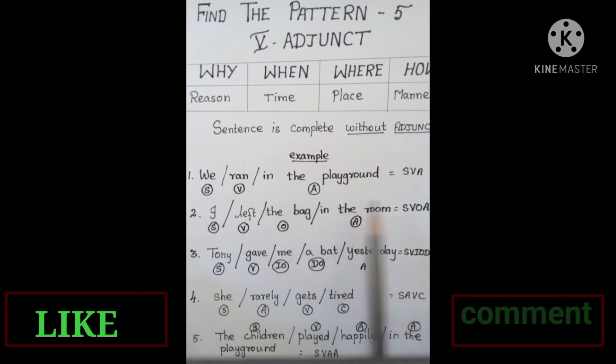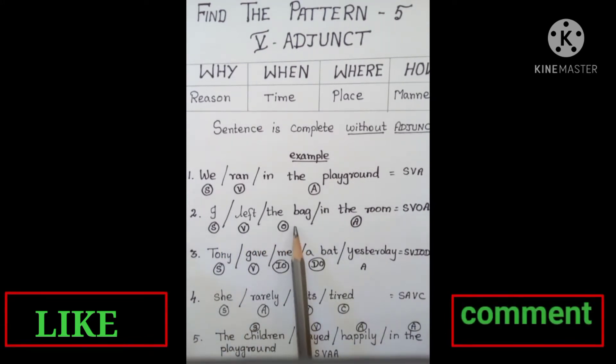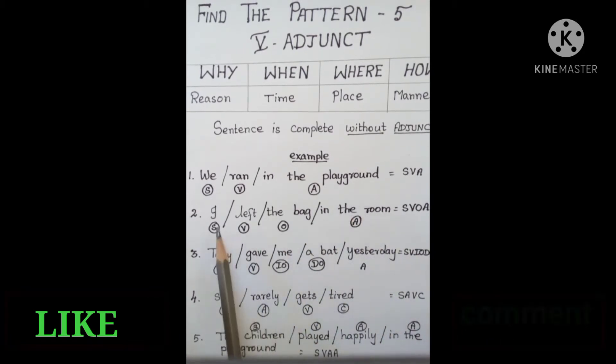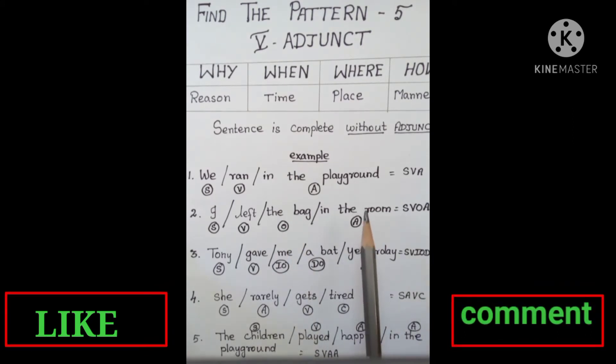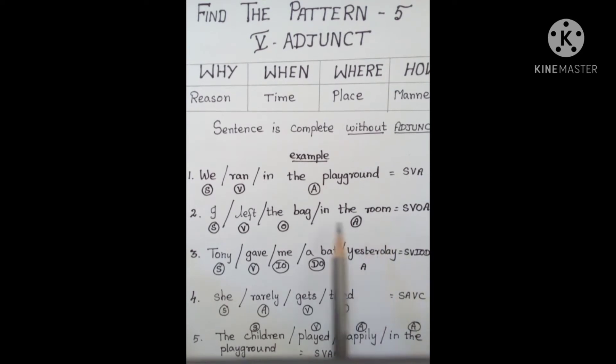Second sentence: Tony gave me a bat yesterday. This is another way. When you give two objects, you have two words. We have to ask the verb What or Whom. You answer the bat.